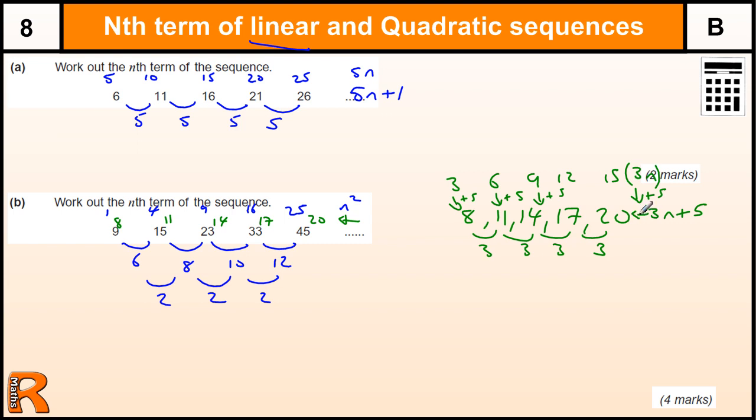This is what we want to add to n squared. So we've got n squared, then we've got 3n plus 5. We're adding those two together to get n squared plus 3n plus 5.